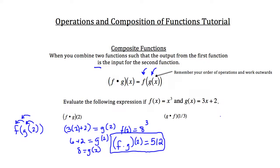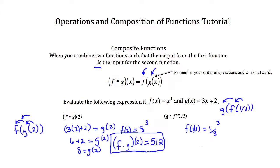Now let's take a look at the second problem: g of f of 1/3. We're going to start by plugging 1/3 into f and then plugging that answer into g. f of 1/3 is equal to (1/3) cubed, which is 1/27.